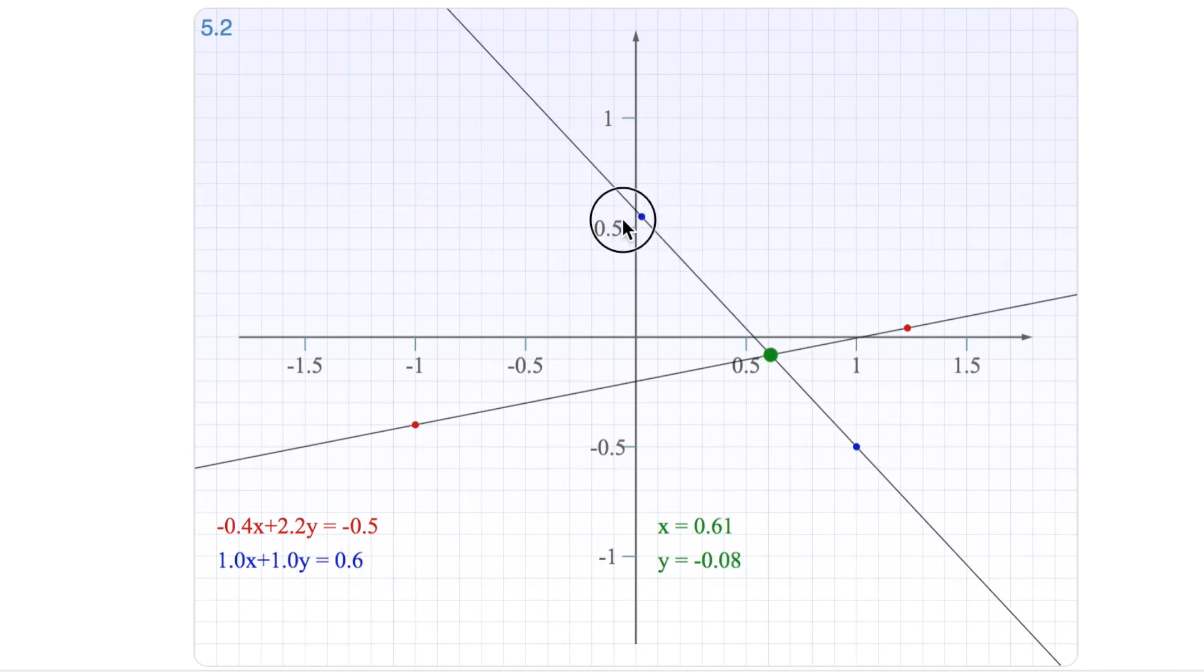Another thing that could be a little bit fun is to see what happens when these lines become close to parallel. If we move this line upwards, you see that the green dot here moves further and further to the right.